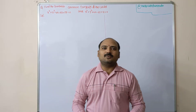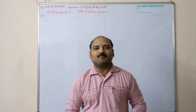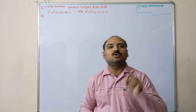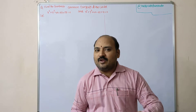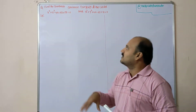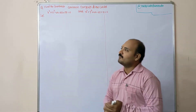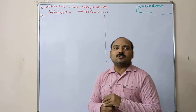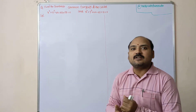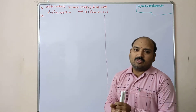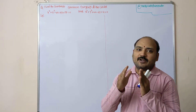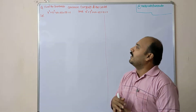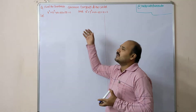Hello dear students, welcome to our channel Maths with Panindra. In this video we are going to discuss transverse common tangent for two given circles. In the last video in the LAQ playlist we discussed direct common tangents. For transverse common tangents we need to calculate the internal center of similitude. The point of intersection of transverse common tangents is called the internal center of similitude.